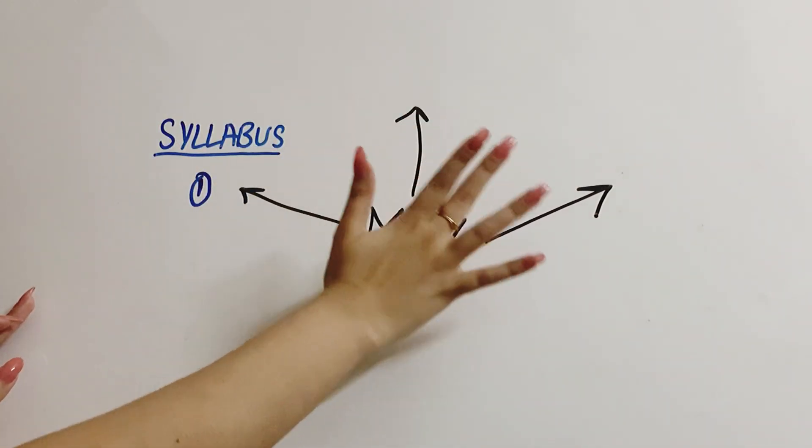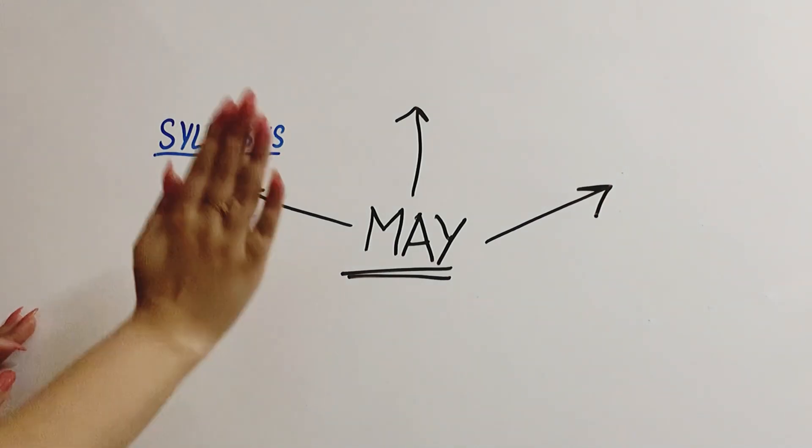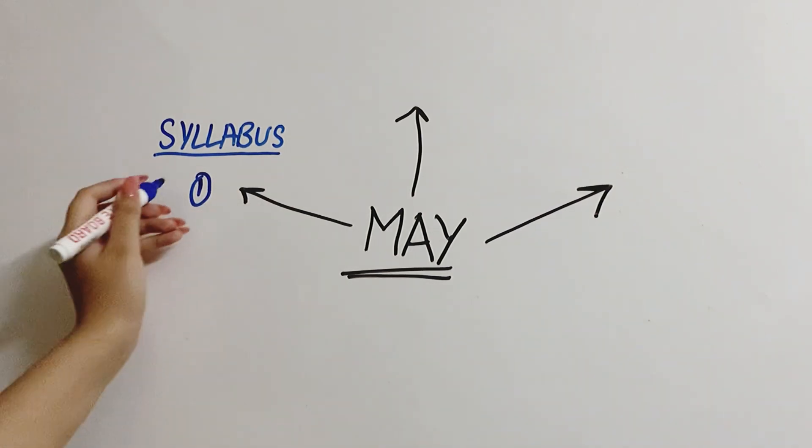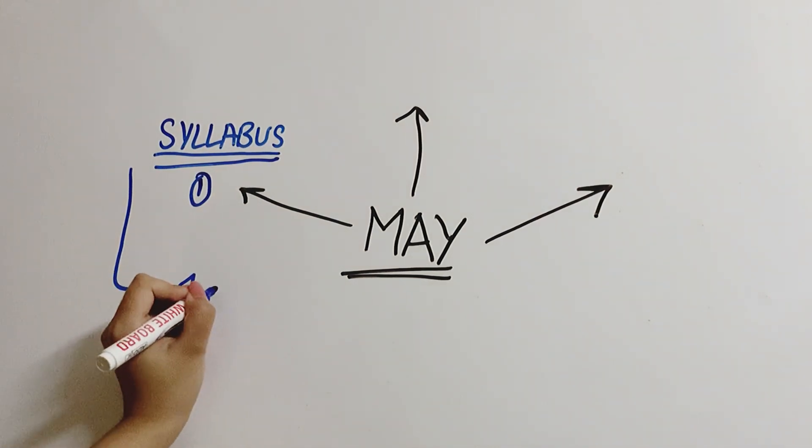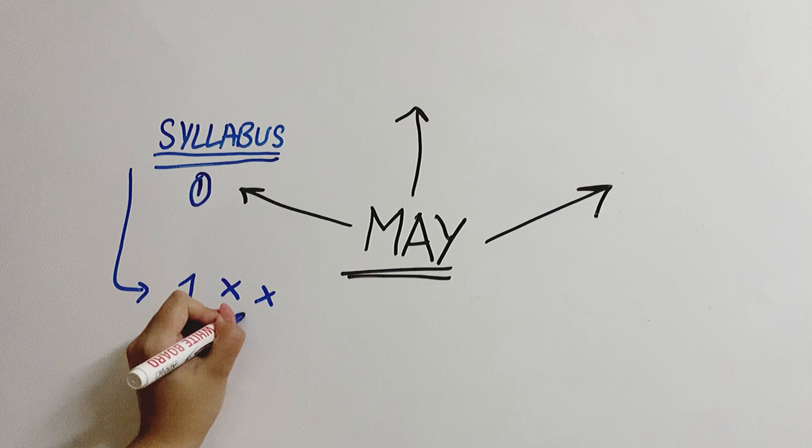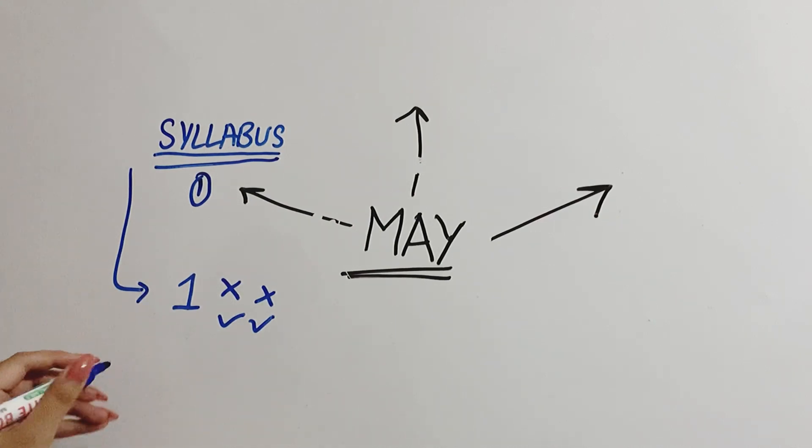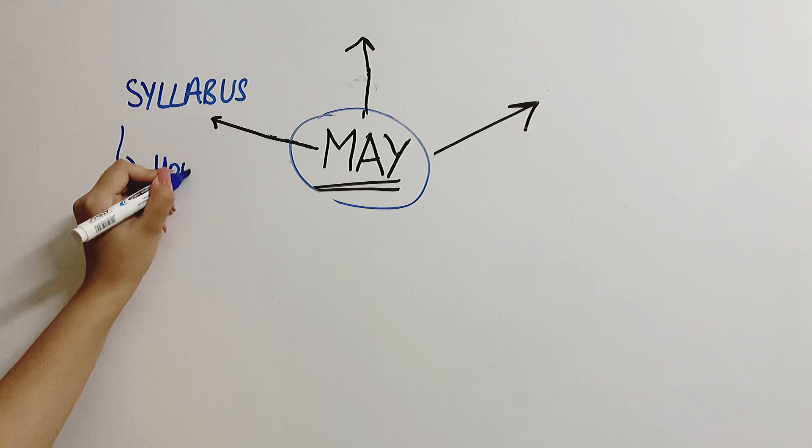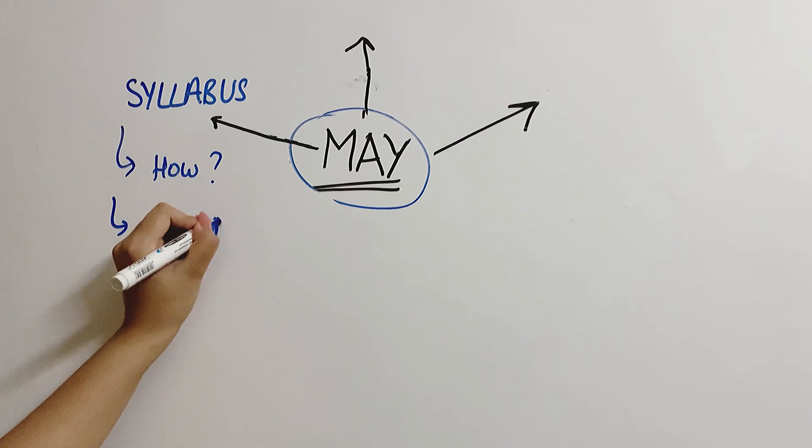In May we will definitely, definitely make sure that our syllabus is completed and if not, then we will do it now, sitting in the month of May. It's never too late. So the first thing is syllabus. If you haven't done the syllabus yet, even once, then you have a good chance to make use of this month. But I think someone's gone and you will have at least thrice your syllabus complete.